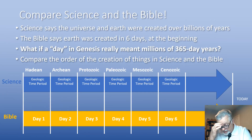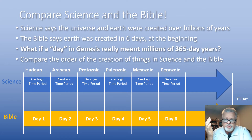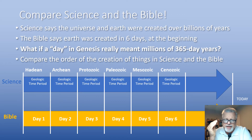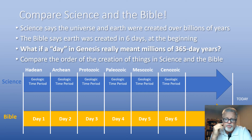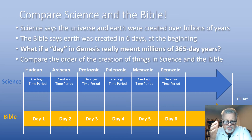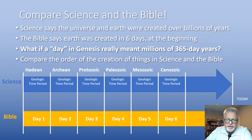Now, if you compare what the Bible says and what science says, you might lay it out something like this. Science says the universe and earth were created over billions of years, but the Bible says the earth was created in six days. So what if a day in Genesis really meant millions of 365-day years? We will look at the six different scientific periods of what was created and when, and lay them alongside the six days of creation to see if we can find anything of comparative value.